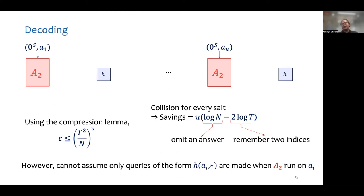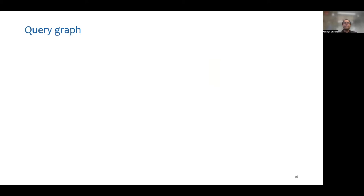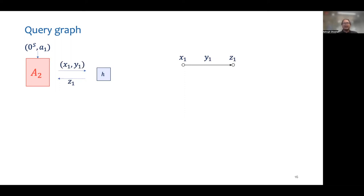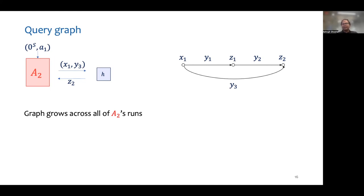But remember, we made a false assumption, so we have to work much harder to get rid of it. To this end, as a first step, we introduce the notion of a query graph. This is a graph that is initially empty. When we start running the adversary on salt A1, if it makes a random oracle query on (x1, y1) and the answer is z1, we add nodes for x1 and z1 and add a directed edge from x1 to z1 with label y1. When it makes a query on (z1, y2) and the answer is z2, we add node z2 and a directed edge from z1 to z2 with label y2, and so on. The graph grows as we run the adversary on all u salts. Note that the adversary when running on a salt may make queries it made earlier while running on a different salt, contrary to our earlier assumption.